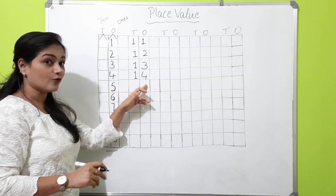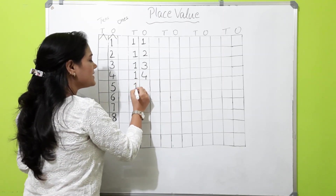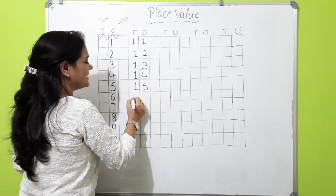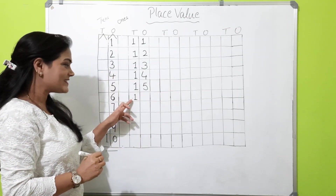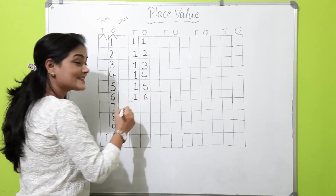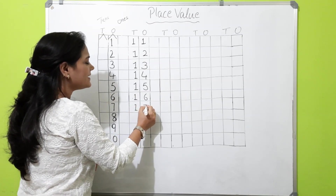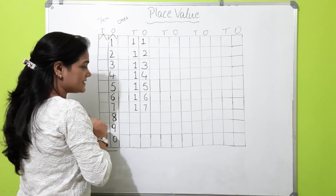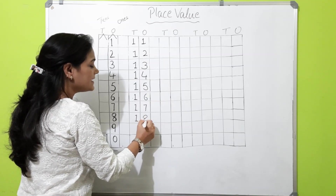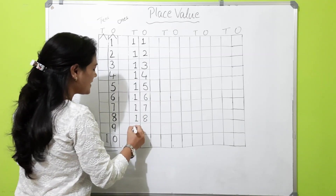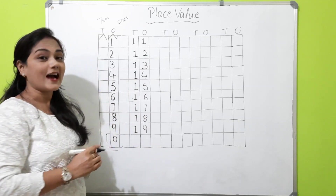One ten and four is fourteen. One ten and five — fifteen. Speak after me. One ten and six — sixteen. One ten and seven — seventeen. One ten and eight — eighteen. One ten and nine — nineteen.